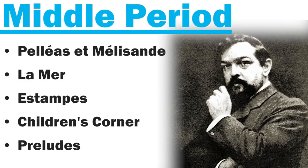During Debussy's middle period, he composed a very anti-Wagnerian opera called Pelléas et Mélisande, which was very successful and influenced the works of subsequent French composers like Maurice Ravel. It was anti-Wagnerian in the sense that Wagner was all about giant symphonies, bombast, and lots of flair, whereas this was a very subdued opera. He also wrote a famous symphonic piece called La Mer in this era.